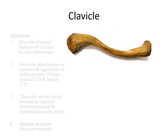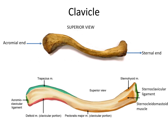The clavicle is the only bony attachment between the shoulder and the trunk. It is a bone having an S-shaped contour. It has two ends: one lateral flattened end, the acromial end, and one broader quadrangular medial end, the sternal end. The medial two-third part is convex forwardly and the lateral one-third part is concave forwardly. Its superior aspect is more or less smooth in comparison to its inferior aspect. This is the clavicle of the right side.